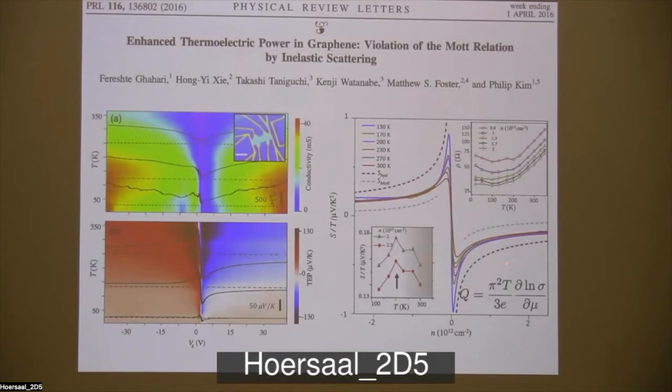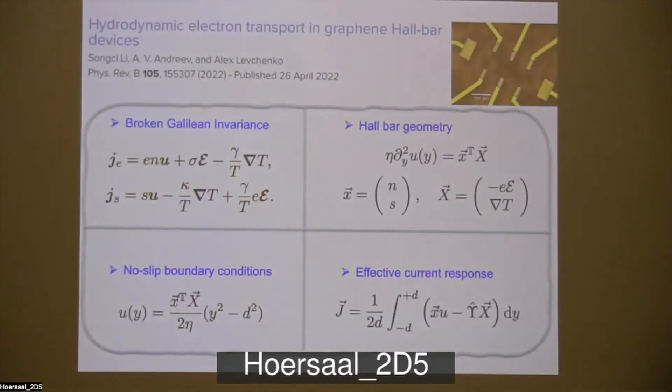So they had also a follow-up experiment where they measure thermopower. Again, in a single particle picture, there is a Mott formula that relates thermopower to a logarithmic derivative of the conductivity. And these dotted lines represent Mott formula. And these are measured data at different temperatures. And again, Mott underestimates the actual value of the measured thermoelectric coefficient by a factor of two. And in this case, it's 100% disagreement. All right. So let's try to generalize this Gurzhi picture to electrons in graphene. I will tell you this not in chronological order the way I worked this, but I think in the order that it's easier to understand.